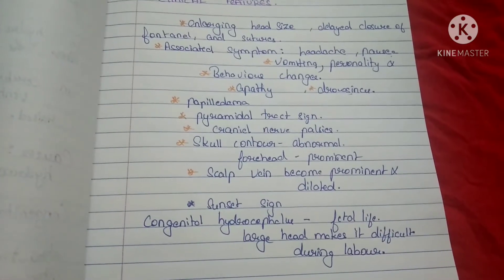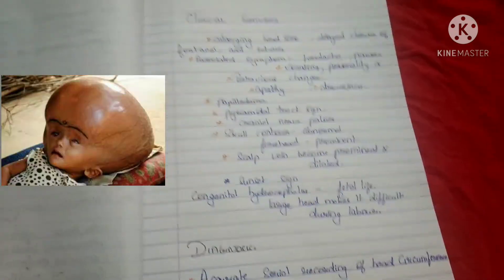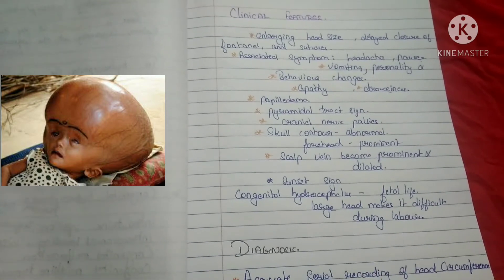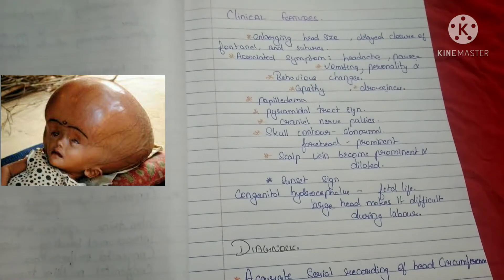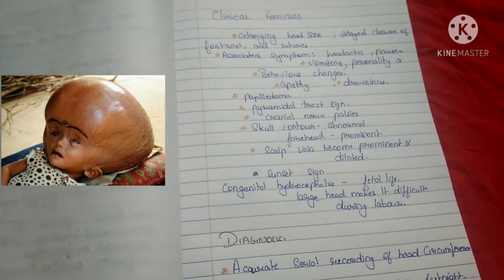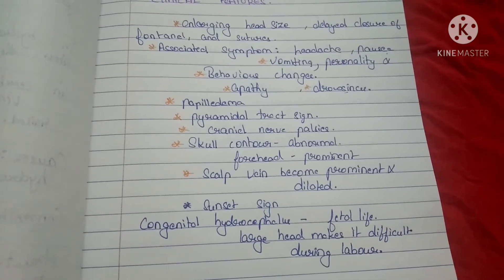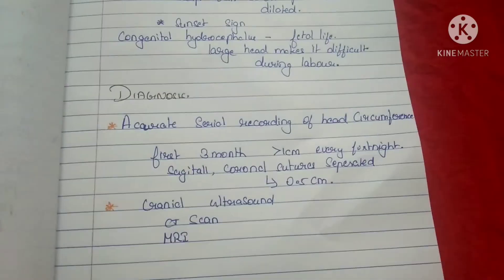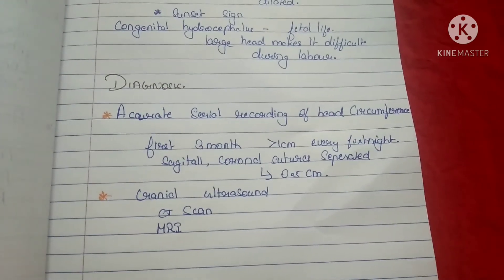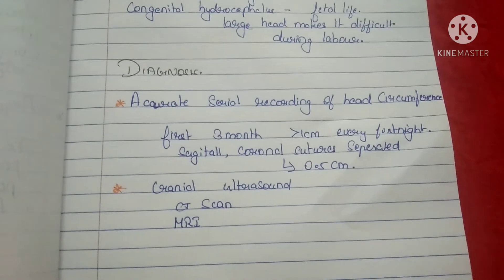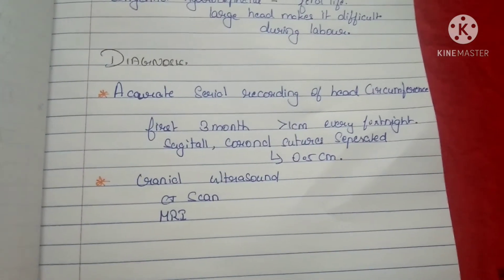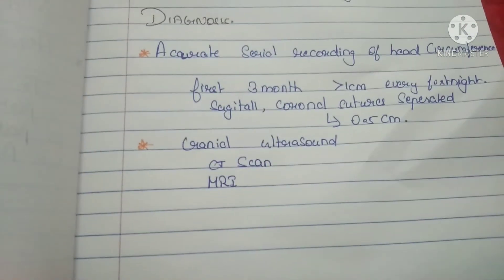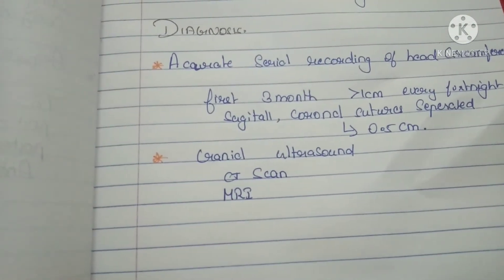Other features include pyramidal tract signs, cranial nerve palsies, abnormal skull contour with prominent forehead, and dilated prominent scalp veins. There is also a sunset sign, where the sclera above the cornea becomes visible. In congenital hydrocephalus, even in fetal life the head is large, making labor difficult. Accurate serial recording of head circumference is important; in the first three months there is an increase of one centimeter every fortnight, and the sagittal and coronal sutures will be separated by about 0.5 centimeters.